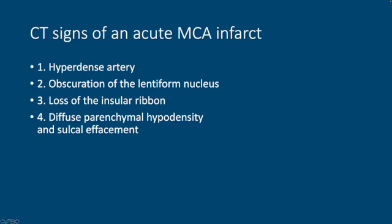And then there's diffuse parenchymal hypodensity and sulcal effacement. These are all early signs of acute stroke on CT. Now, remember that in general, CT is a pretty blunt instrument for the diagnosis of acute stroke, because it takes anywhere from six to eight hours for signs two through four to actually show up. And by that time, the patient's generally out of the IV tPA window, still eligible for mechanical thrombolysis potentially. Hyperdense artery can actually show up much earlier, which is why it's particularly important to recognize.